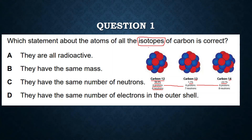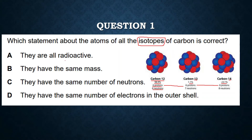The difference in isotopes is the number of neutrons, which changes the nucleon number or atomic mass. But the number of protons and the number of electrons — the atomic number — are the same. Now look at the options. The first is: they are all radioactive.